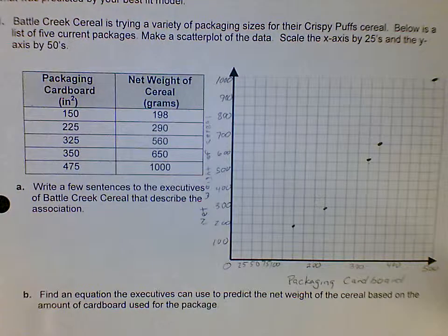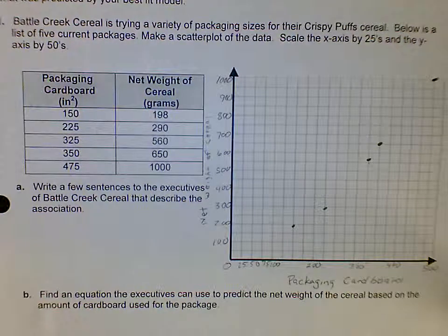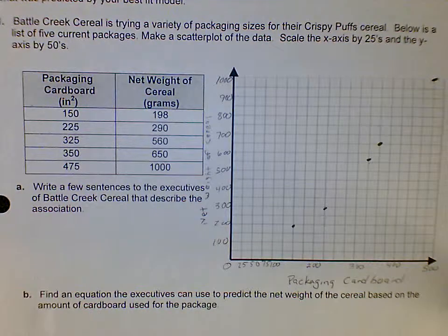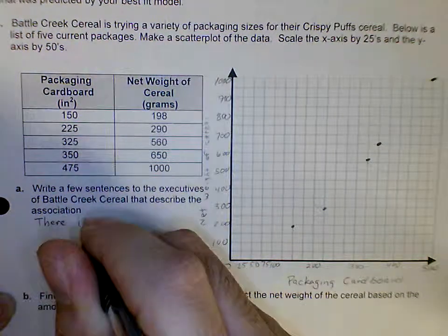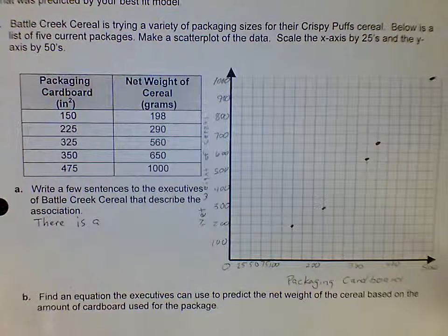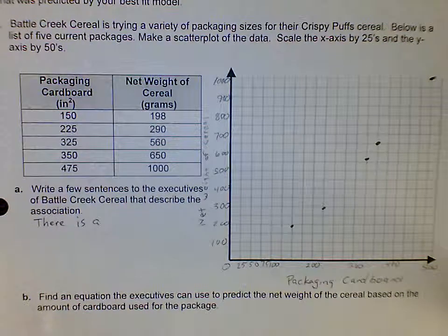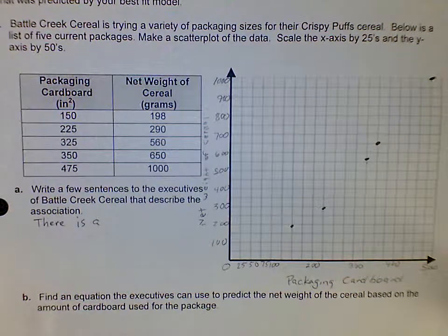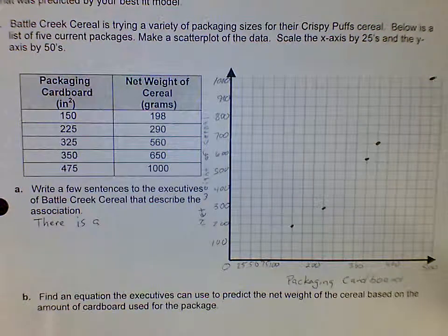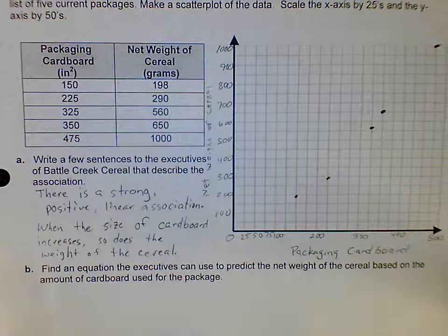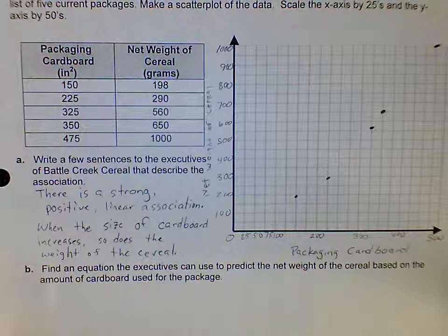It says write a few sentences to the executive of Battle Creek Cereal that describes the association. Let's remember the things from last week: we want to know the strength, the form, and the direction. So there is a strong, positive, linear association. Since all of our dots are close together they do make a line, so it'll be linear, and they also go in a positive direction. As the weight of the cereal increases, so does the packaging amount of cardboard.